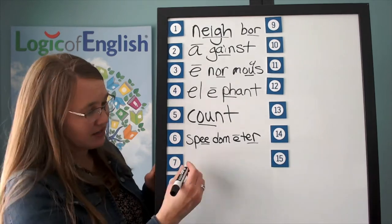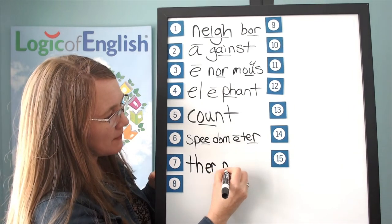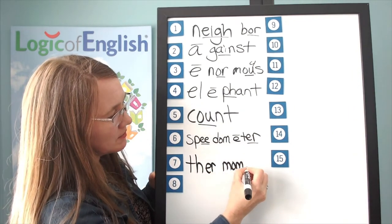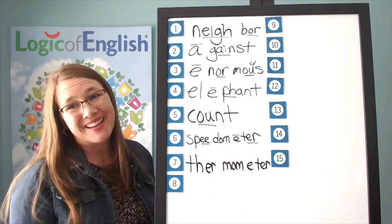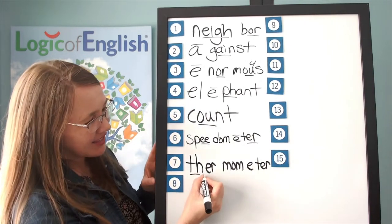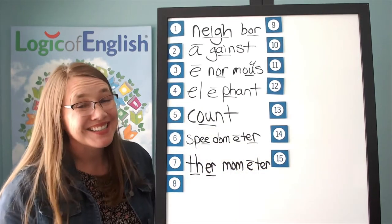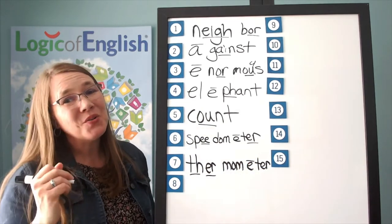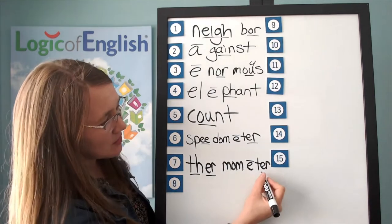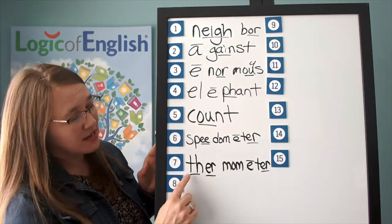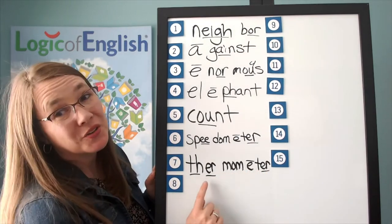Help me to write it: thur — TH, ur; mom — M, ah, M; e; tur. How do we mark it? Underline the TH and the ur. We'll put a line over the E. A-E-O-U usually say their long sounds at the end of the syllable. And we'll underline the ur. Thur-M-ah-M-e-tur. Thermometer. Excellent.